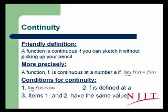More precisely, a function f is continuous at a number a if the limit as x goes to a of f of x is equal to f of a. What that means is that as you come in toward x equal a from the left and from the right, you get the same value, and the function itself has that same value. So the limit exists, and the function value exists, and those match up.